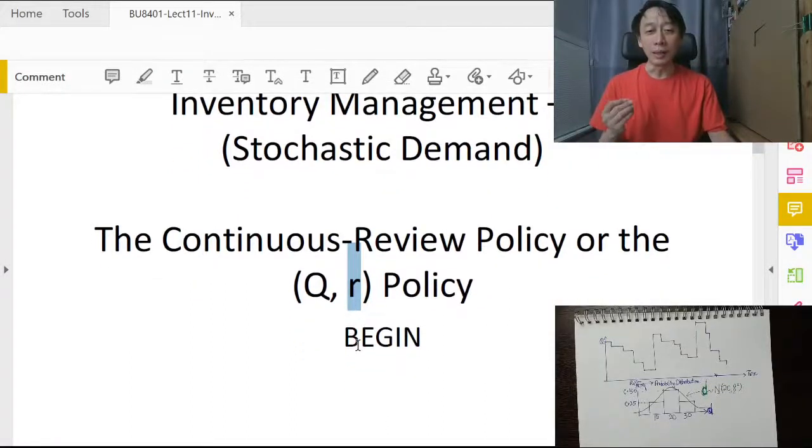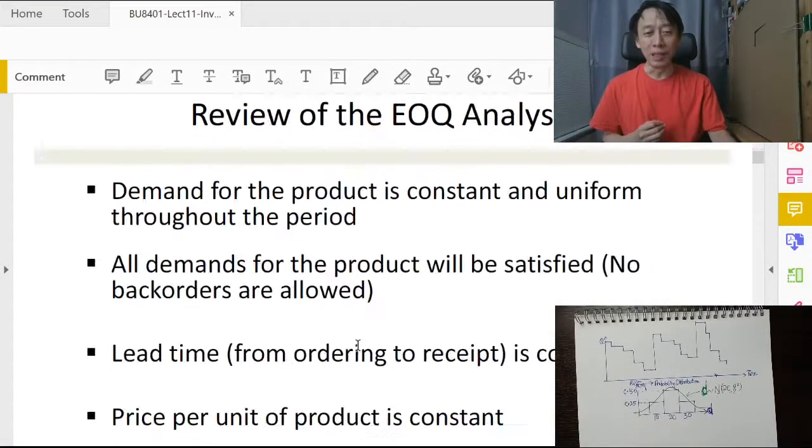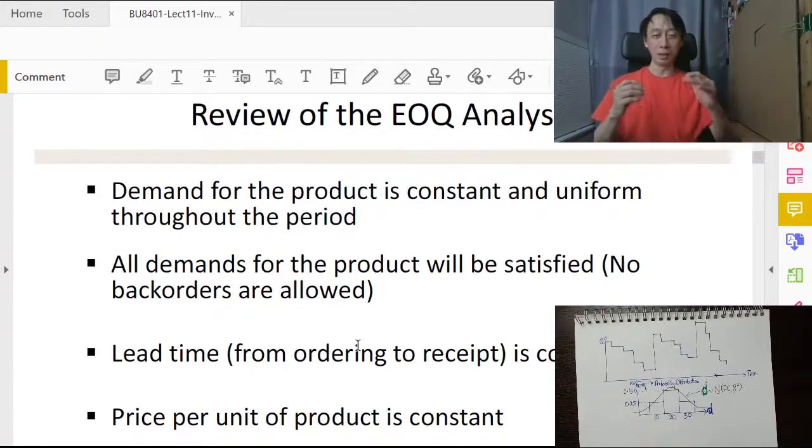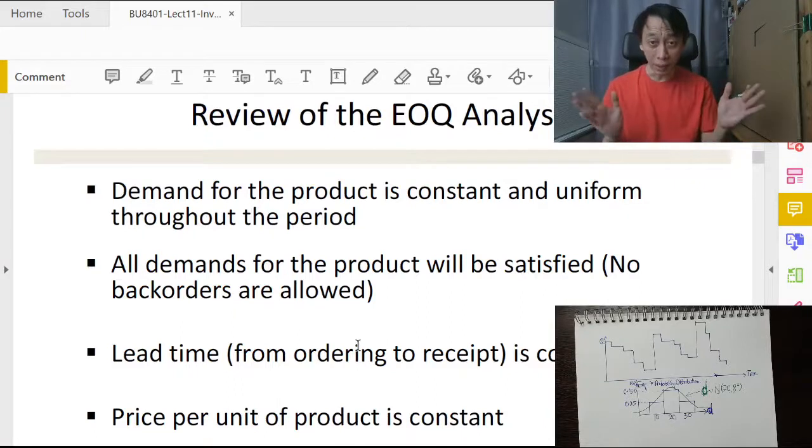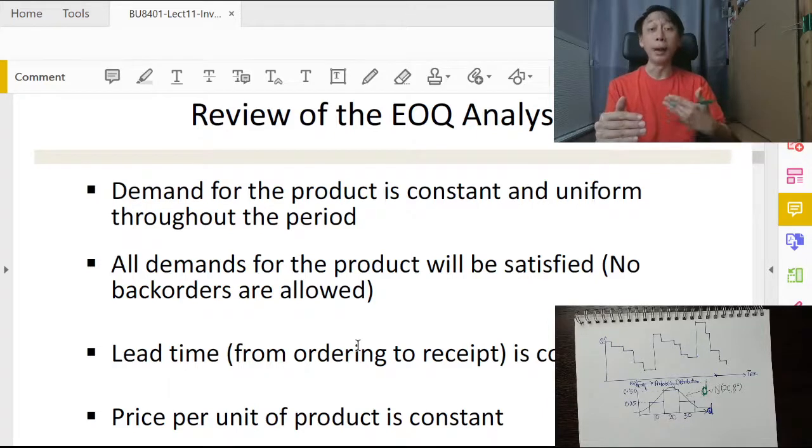Okay, good. So under this review, we need our theory about the constant demand EOQ that we discussed in the other video. So under constant demand, let me just be clear, we are talking about dynamic probabilistic demand.